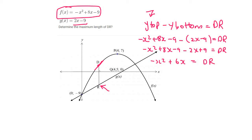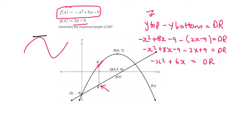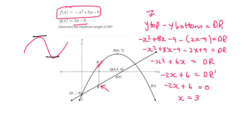In calculus, to find minimums and maximums, it's all about making the first derivative equal to zero. So we take the first derivative of minus x squared plus 6x, and set it equal to zero. That ends up giving us x equals 3. Now they haven't asked for the value of x — they actually want the length.